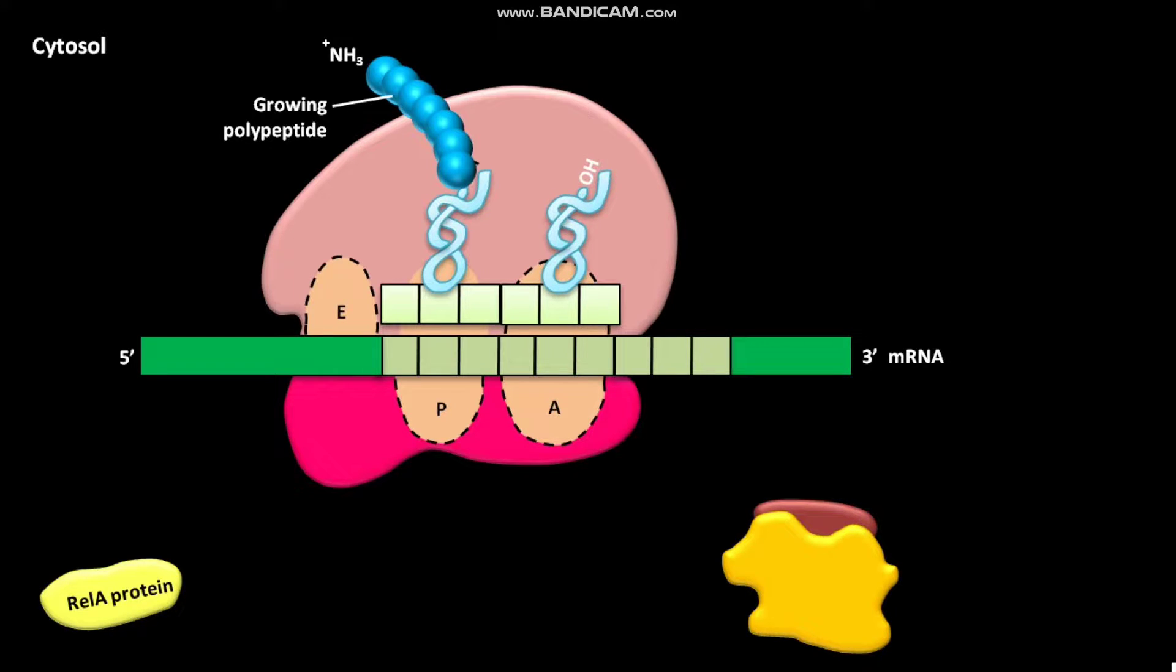REL A protein is called a stringent factor. REL A protein then binds to the ribosome. GTP and ATP then bind to the catalytic site of REL A protein.